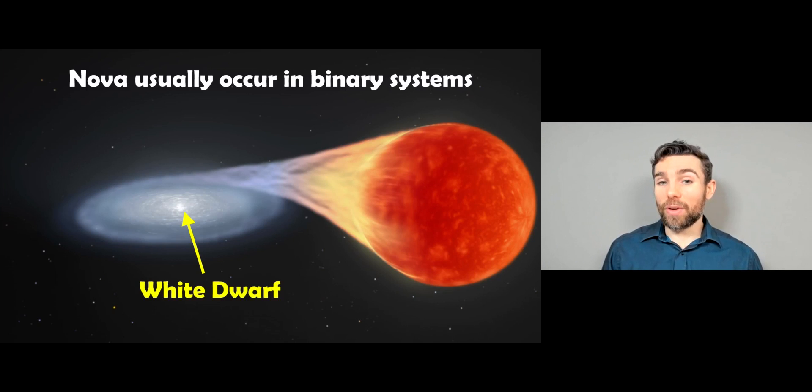Now, nova usually occur in binary systems, and actually, this might look familiar in the sense of a type 1a supernova. It's the same sort of system. So you've got a white dwarf star in a binary system with a larger star, maybe a red giant, maybe a solar mass star.